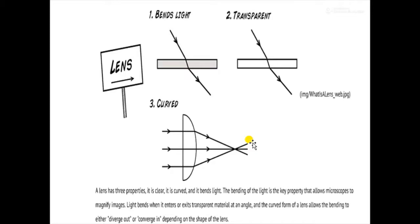Just imagine a situation: if you are standing in a big crowd and a light is focused onto you, you will be viewed more clearly. In the same way, if all the light occurring around is focused onto a particular organism or specimen, you will be able to view it in a better way. So bending of light is needed to focus light onto a particular organism or specimen. The three properties of a lens are: it bends light, it is transparent, and it is curved.